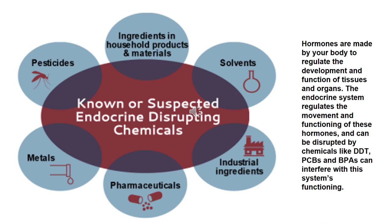As you probably know, hormones are made by your body to regulate the development of your body and the function of tissues and organs — one way one part of your body can communicate with another. Different organs can regulate each other. But the production of hormones can be disrupted by chemicals like DDT or PCBs and other environmental toxins, and interfere with yours or any organism's functioning.